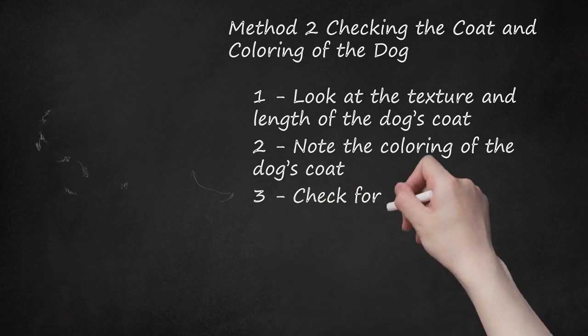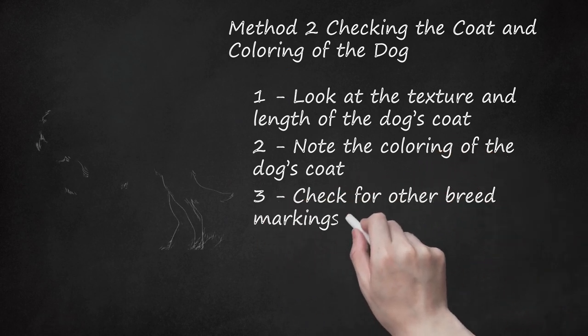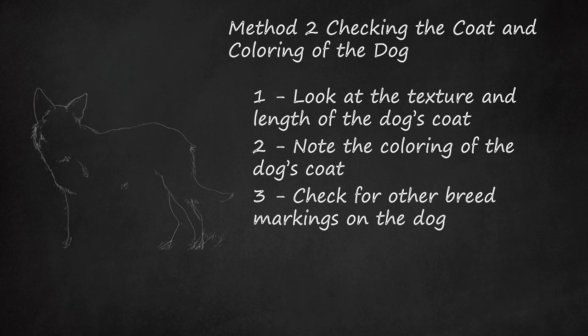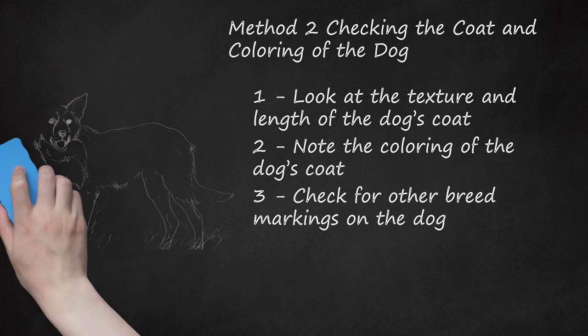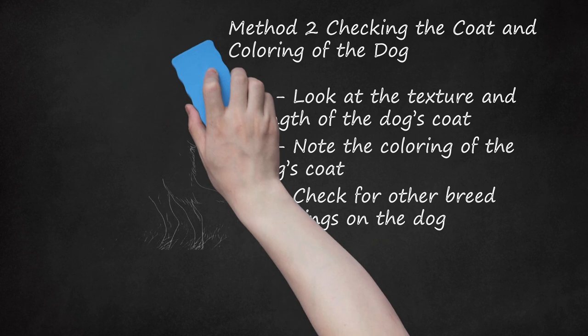Check for other breed markings on the dog. Nearly all collies, no matter the variety or coloring, will have certain breed markings on their coat. They will have a white collar, chest, legs, feet, and tail tip. They may also have facial markings that are white, called a blaze.